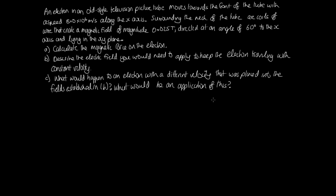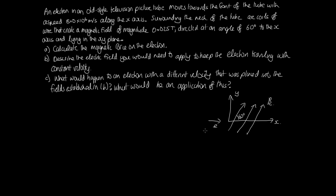To start this problem, let's draw a diagram. We'll draw our x-y axes — here's x, here's y — and our electron is traveling along the x-axis. Then we have a magnetic field which makes an angle of 60 degrees with the x-axis, so this angle in here is 60 degrees, and this is the magnetic field.